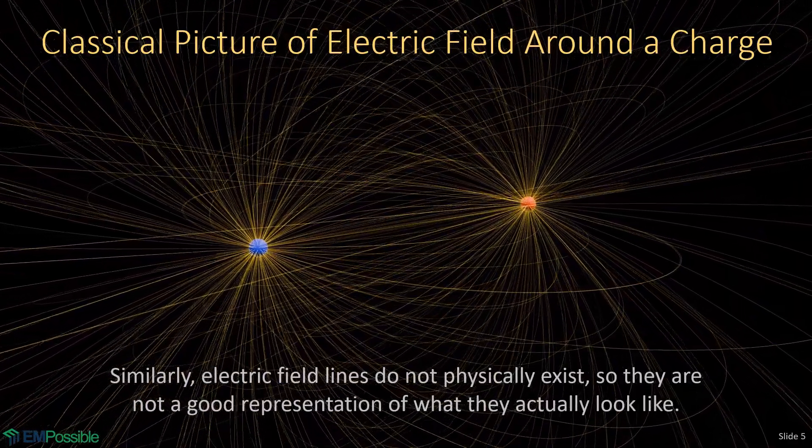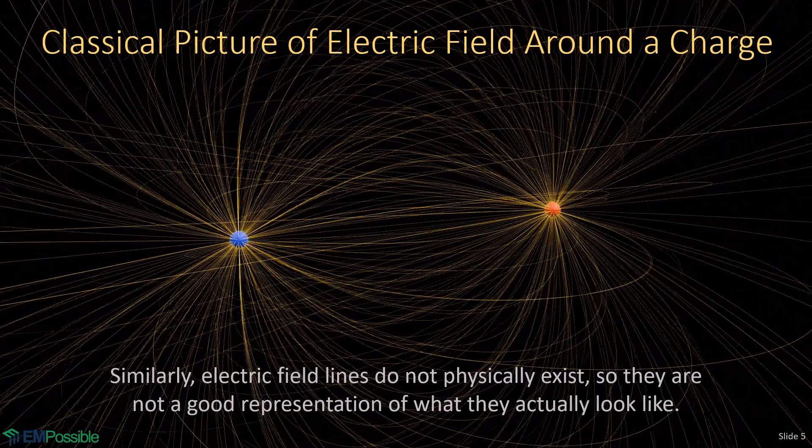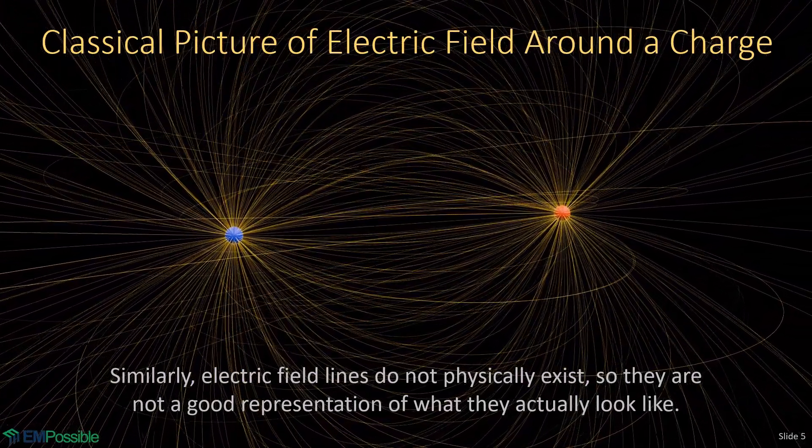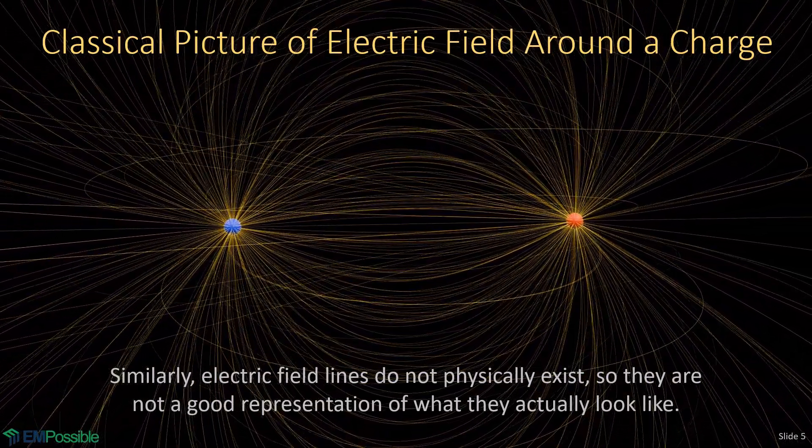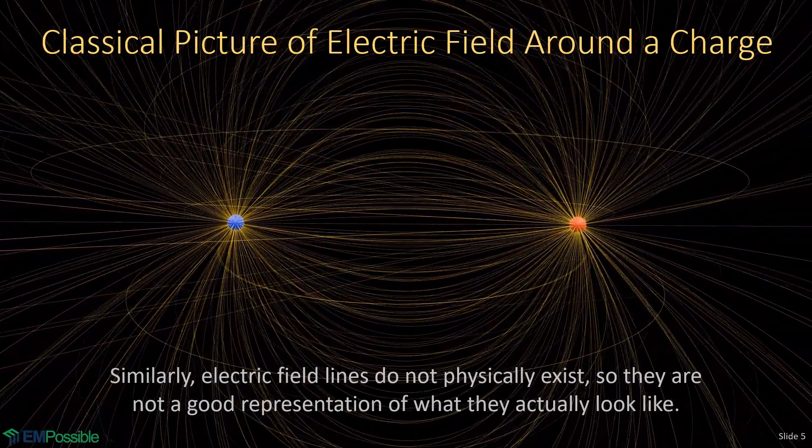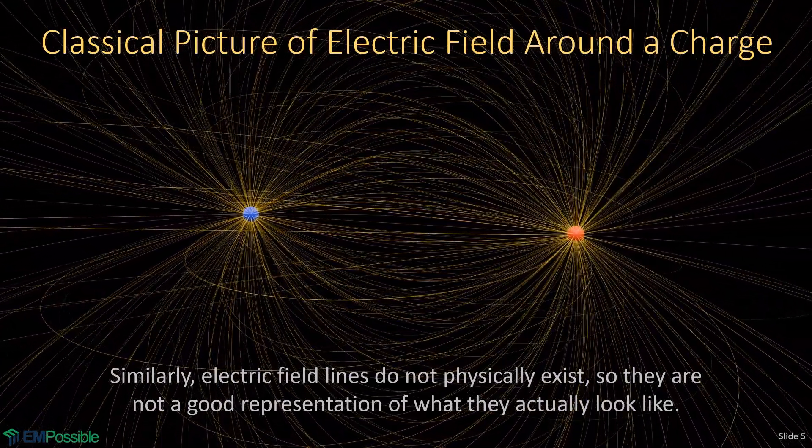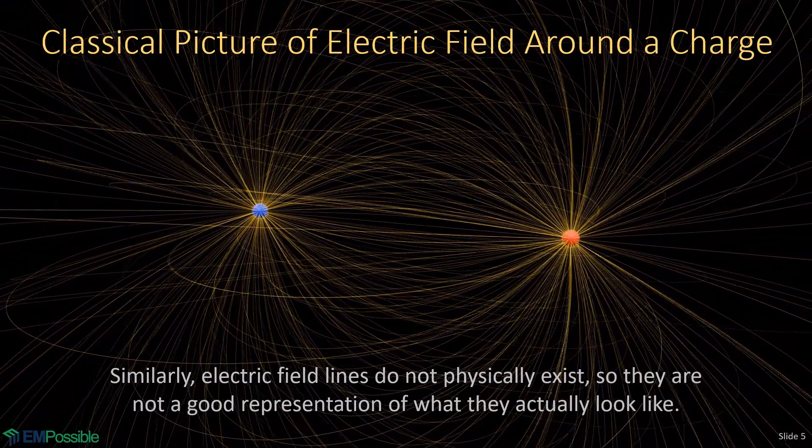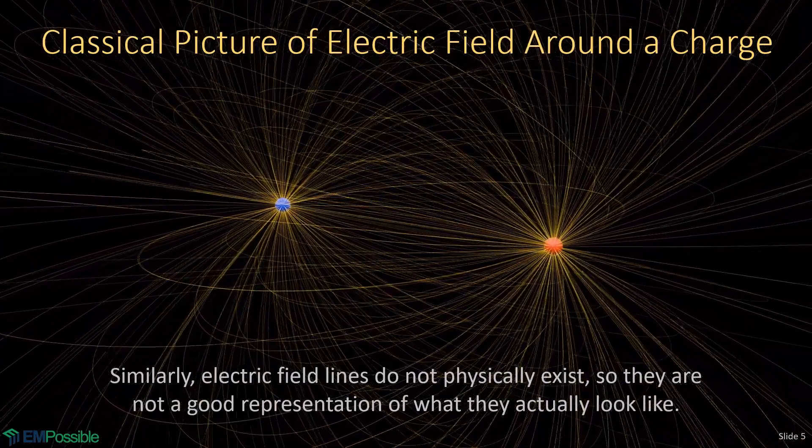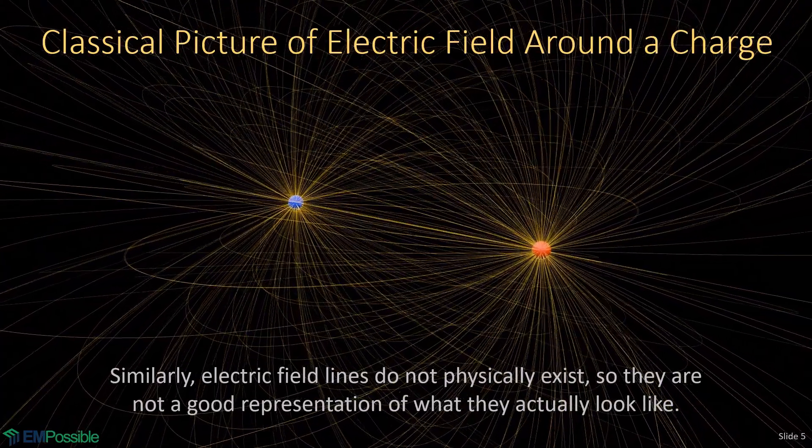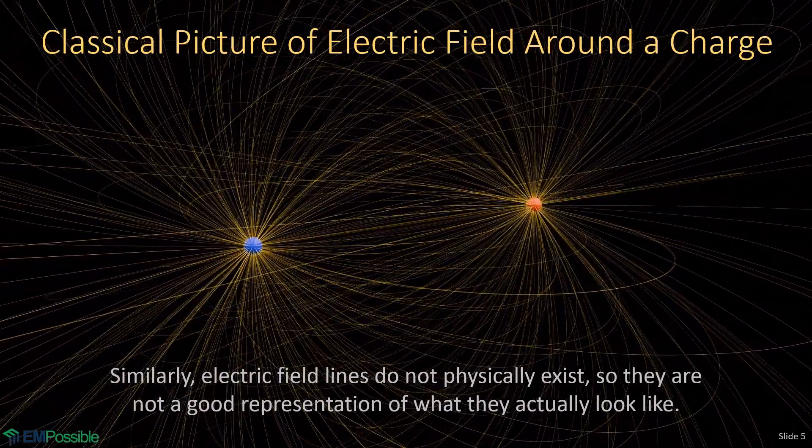People that start to study electromagnetics, they'll also see these field lines for electric fields. Here we're looking at a visualization of the electric field lines between two different charges, the blue spheres representing a negative charge, and the red sphere a positive charge. Again, I think beginners come away from something like this with the impression that electric fields are stringy, blotchy things, where the electric field exists on the line, but not off the line. But like magnetic fields, this is just a tool, the lines are just a tool, to help us track the direction of the electric fields. Electric field lines do not physically exist, and so I think this type of picture is misleading when we're trying to understand what the electric field actually looks like.